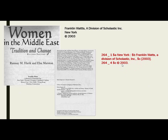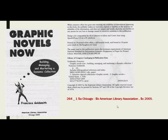A lot of catalogers, myself included, will then do a 264 with an indicator of four just to tell people that the date in brackets is the copyright date. Does that make sense? This is probably one of the bigger changes with RDA — the way we think about the publication information has become much more precise. Here's another example. On the title page you can see the publisher, the place of publication, a publication date, and also a copyright date.